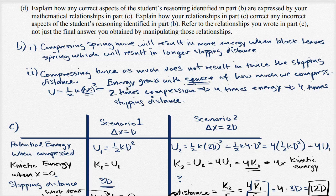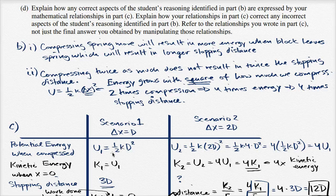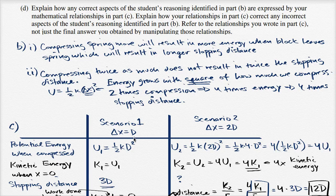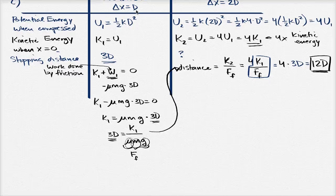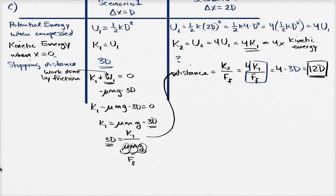It's a bit of a mouthful, but they're just saying, hey, kinda connect the dots between part C and the two parts of part B. Refer to the relationships you wrote in part C, not just the final answer you obtained by manipulating those relationships. And so let me write it down here.